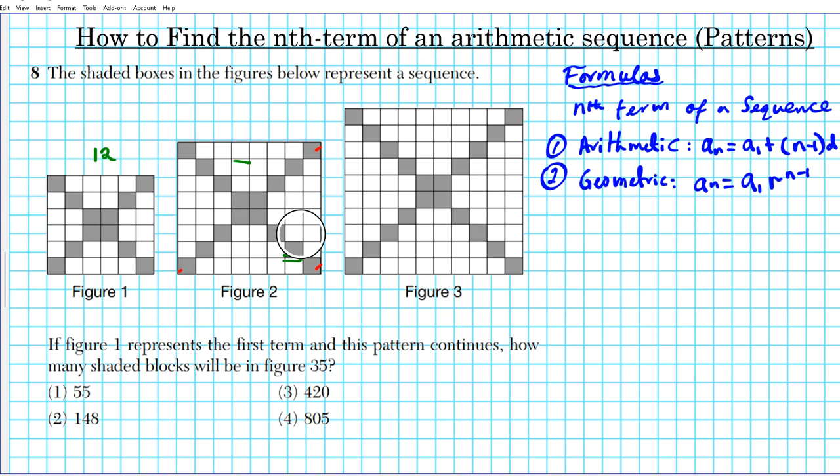We can confirm by counting the number of boxes in figure 2: 1, 2, 3, 4 - the center 4, and every time you go out, you're going to add 4. So 1, 2, 3, 4, 5, 6, 7, 8, 9, 10, 11, 12, 13, 14, 15, 16. There are 16 shaded boxes here. The growth from figure 1 to figure 2 was simply adding four more shaded boxes to the ends.